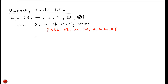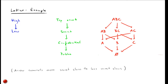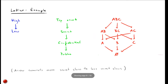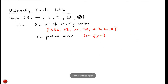The arrow in the tuple represents a partial order on the set of security classes. Essentially, anything that is below a different security class is also below it according to this partial order, as shown in the figure. It is called a partial order because not all elements are ordered with respect to each other — for example, AB and BC are not ordered relative to one another because they are on the same level. That's why it's called a partial order.